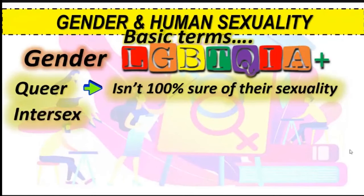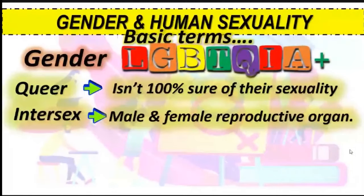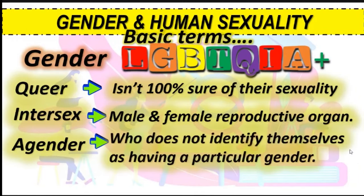Next is intersex. Intersex individuals have both male and female reproductive organs. For example, a person may appear physically female externally, but upon medical examination, they lack female reproductive organs such as the fallopian tube or uterus. This creates a medical condition. They do not necessarily identify themselves as having a particular gender.